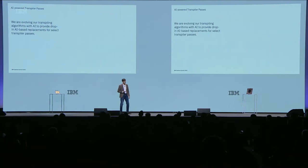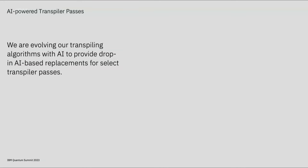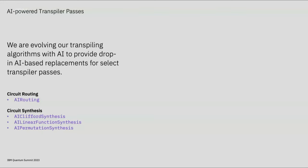Now, let's talk about how we are introducing AI into the transpilation and optimization process. As we also saw in today's keynote, we are thrilled to introduce our AI-powered transpiler passes: secret routing and circuit synthesis. These passes can be used as building blocks in your transpiling routines, just like any other pass, but based on AI. The AI passes usually produce shorter and shallower circuits than the standard transpiler passes in Qiskit and are also much faster than optimization methods such as SAT solvers.